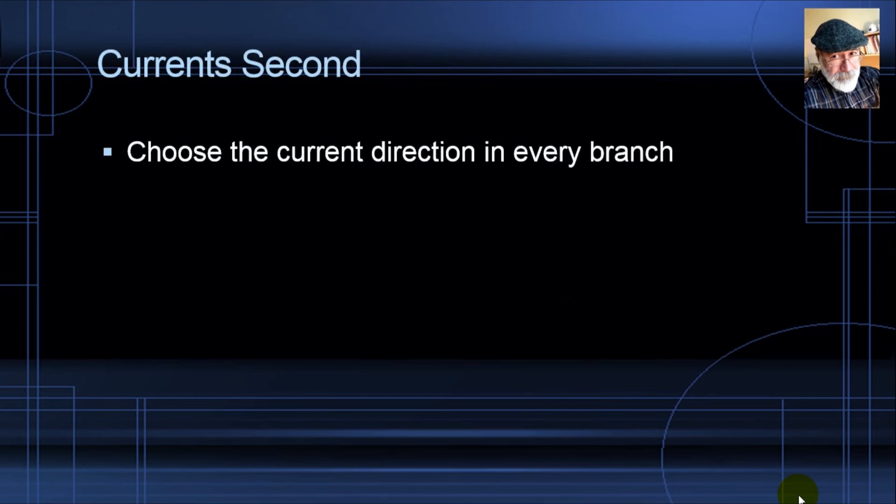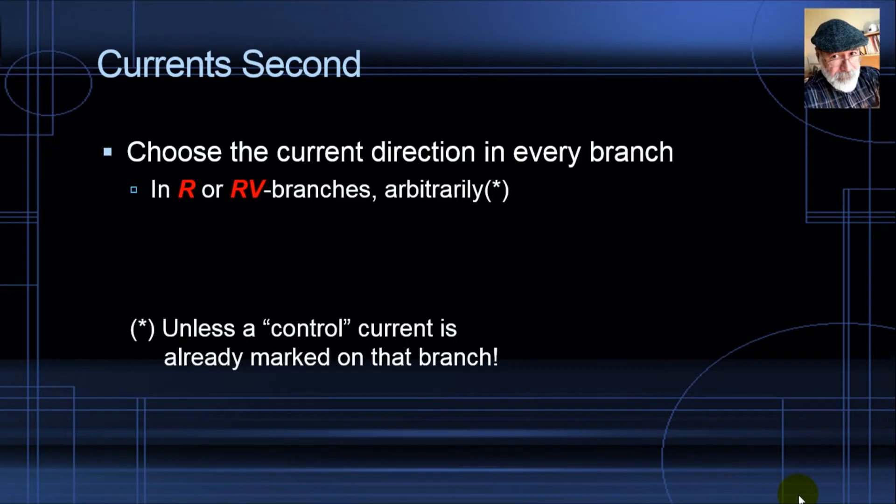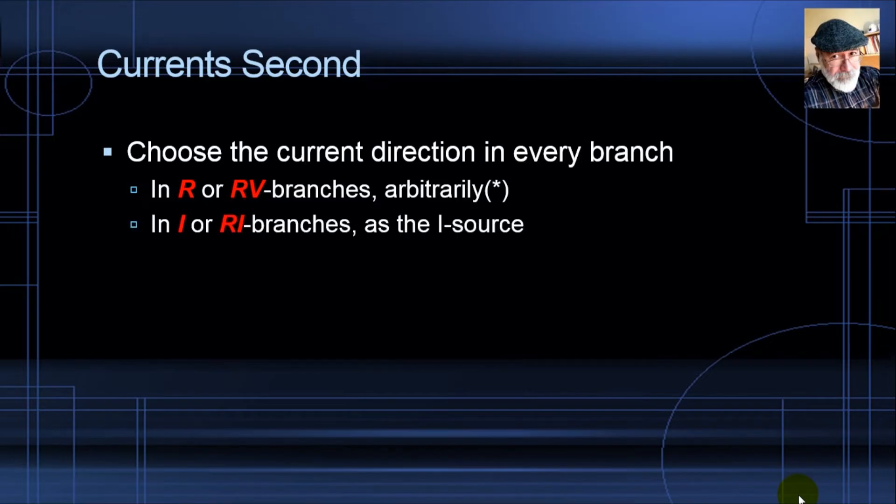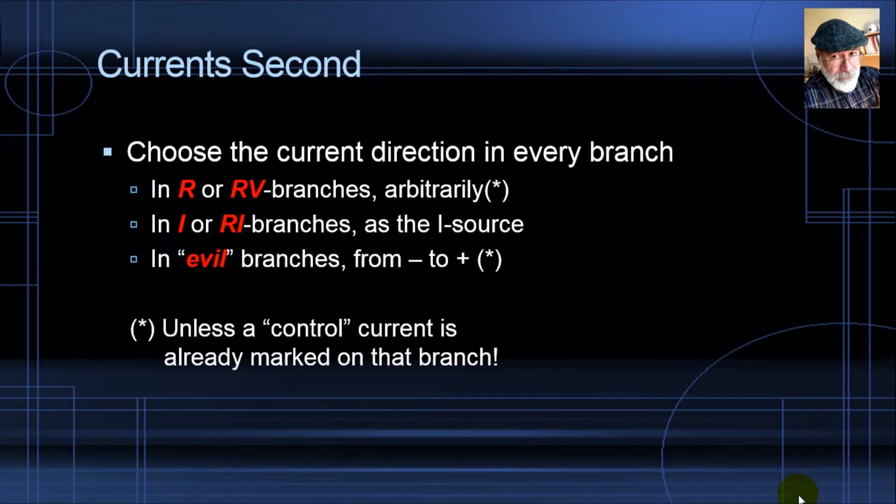And then we deal with currents. Choose the direction of the current in every RV or R branch. It's arbitrary, except of course if there is a control current or a control voltage in that branch. The directions for the currents in I and RI branches is given by the source, of course. In evil branches, choose the evil current flowing in either direction. Personally, I prefer, out of discipline, always to draw them going from minus to plus, unless of course that evil current is also a control current.